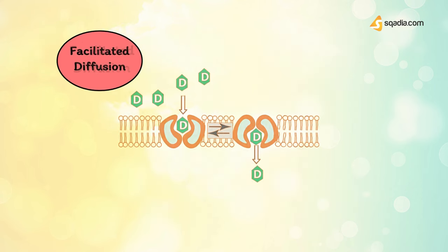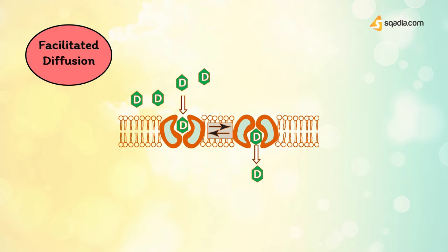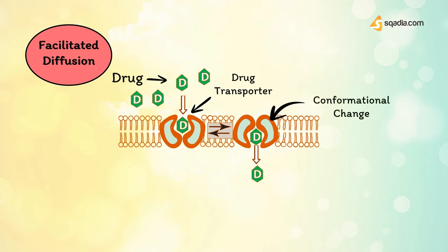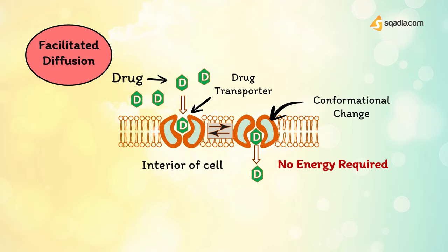In facilitated diffusion, other agents can enter the cell through specialized transmembrane carrier proteins that facilitate the passage of large molecules. These carrier proteins undergo conformational changes, allowing the passage of drugs or endogenous molecules into the interior of cells, moving them from an area of high concentration to an area of low concentration. This process is known as facilitated diffusion and does not require energy.